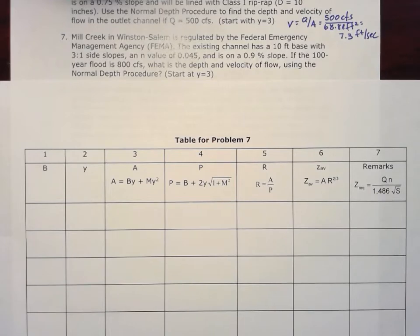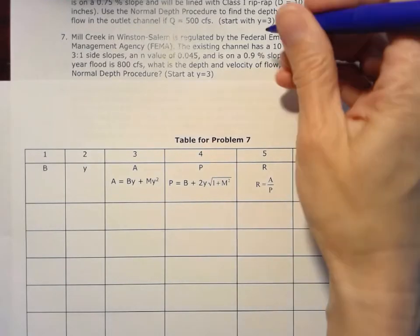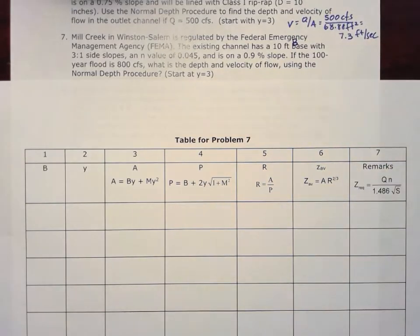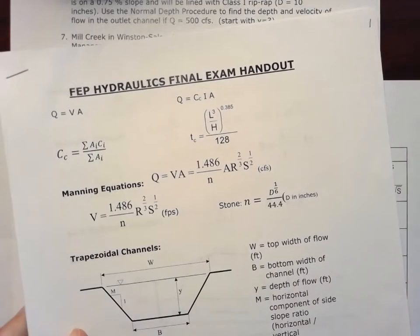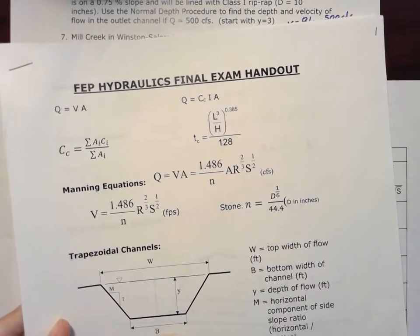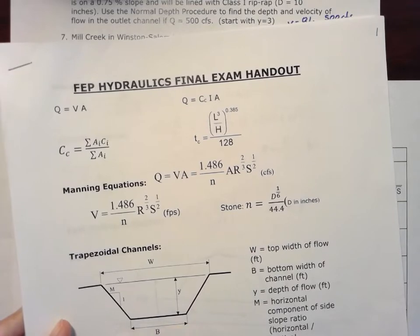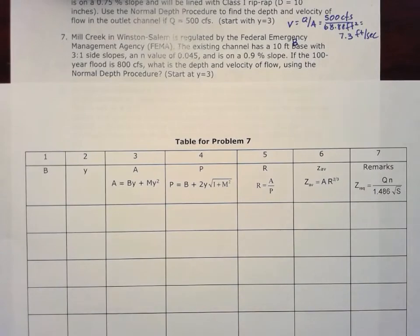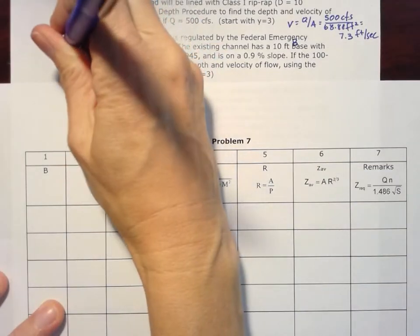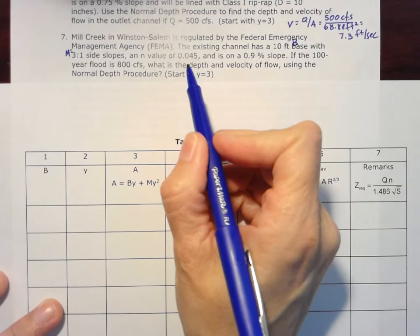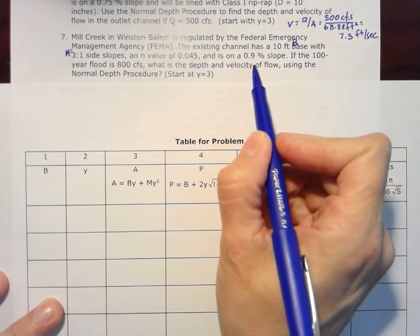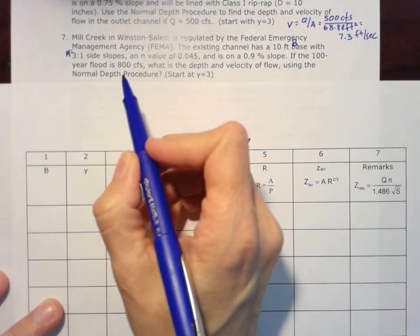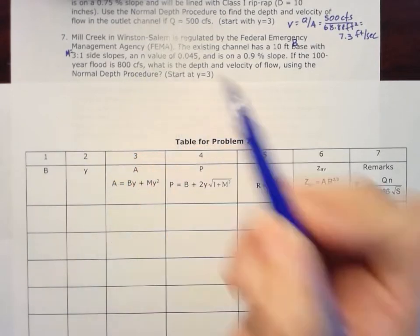So let's go through the problem first and see what we need to know here. We've got a 10-foot base, so we're going to call that our variable capital B from our formula sheet here, where we define different properties of this trapezoidal channel. We also know the side slope is 3 to 1, so that becomes our capital M value. We have our Manning's N that's given to us and a 0.9% slope, and then we know the overall flow Q of 800 cubic feet per second.